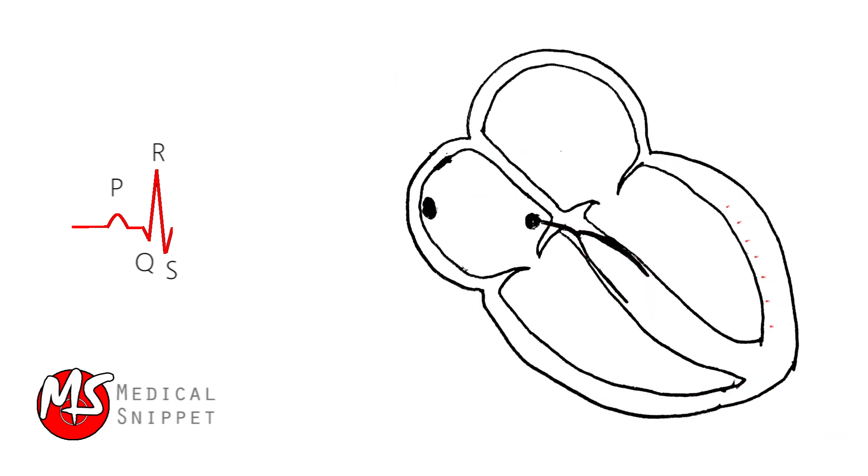The ventricular repolarization proceeds from epicardium towards the endocardium, thus current flows from the endocardial region to epicardium. This results in the rising phase of the T-wave. As the endocardial region starts to repolarize, a second set of currents flow from mid-myocardial region to endocardial cells and it causes the descending limb of the T-wave.